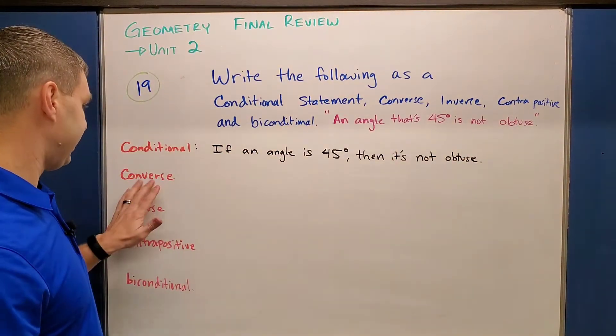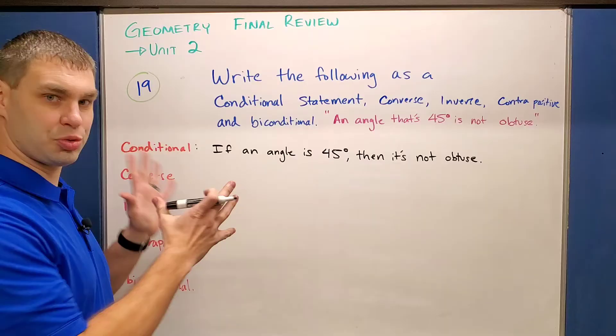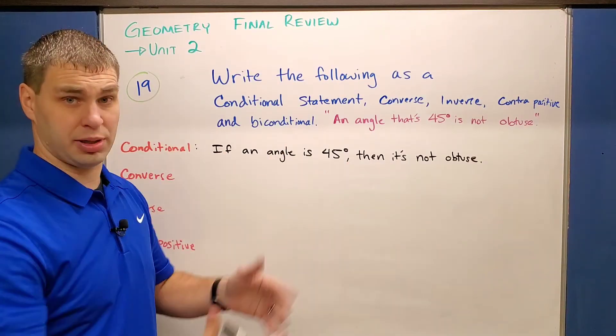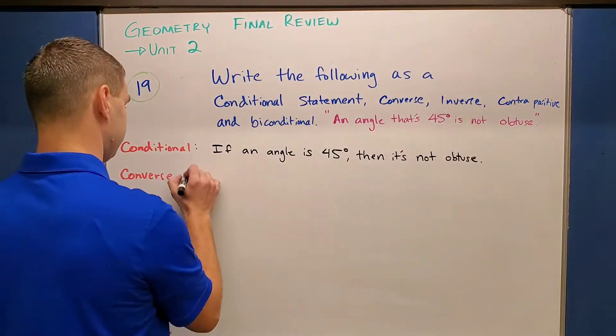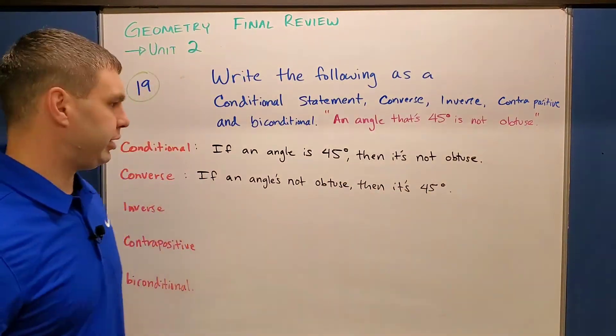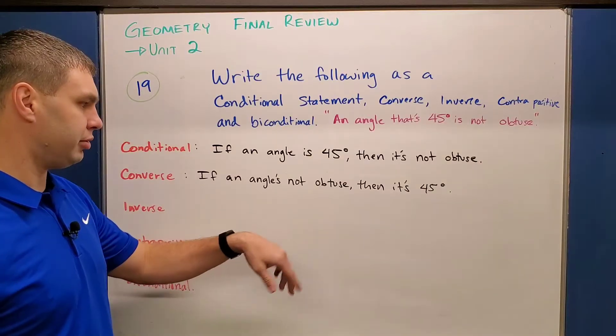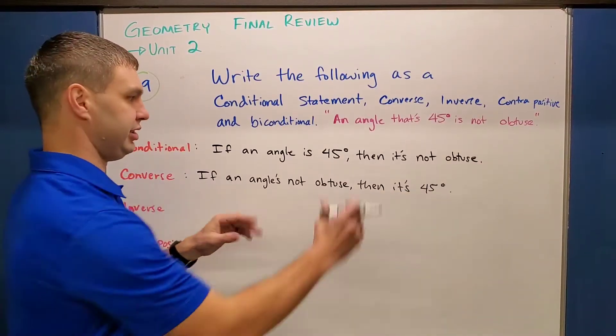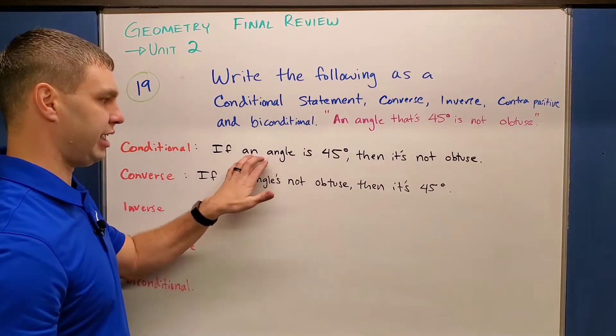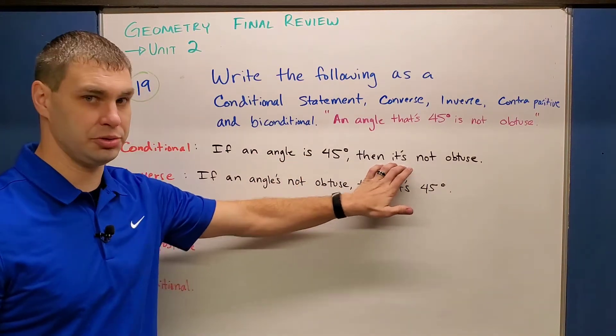The second thing we have to do is write the converse. What the converse does is it switches our hypothesis with our conclusion or the if part with the then part. And it reads, if an angle is not obtuse, then it's 45 degrees. You can see, I just switched our first part with our second part. This is called the hypothesis. Our second part is called the conclusion.